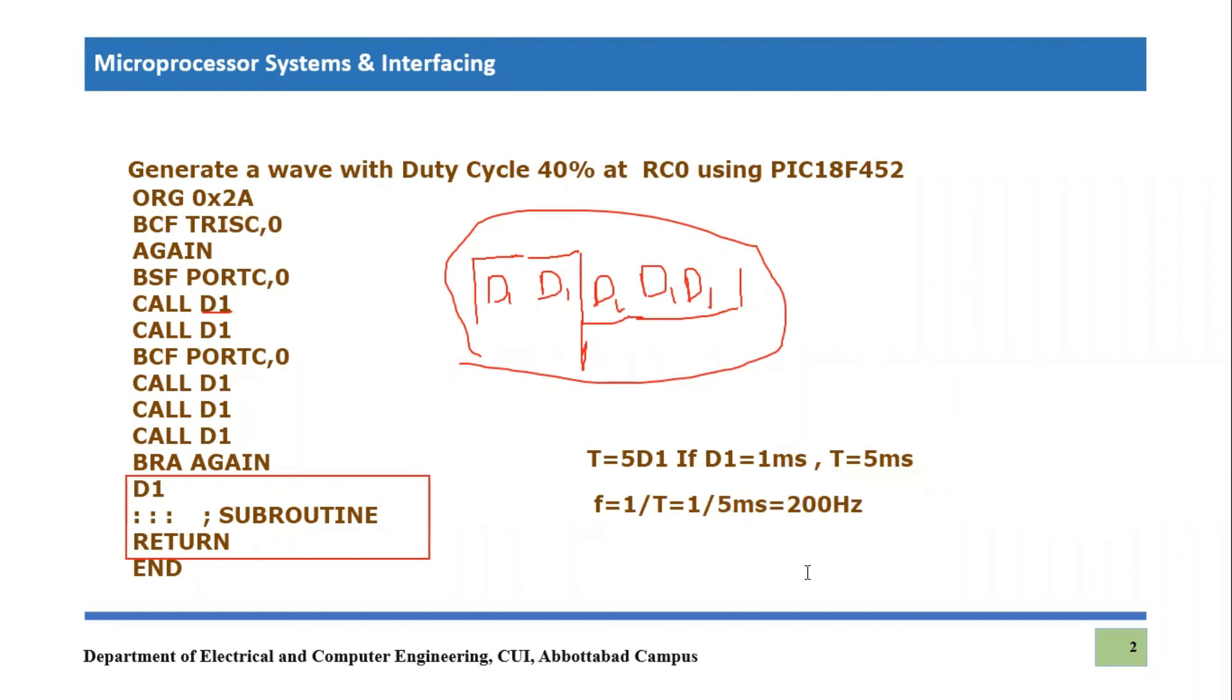Since we can calculate the frequency of this wave using the duty cycle, or if we are known with the duty cycle, we can also reverse the procedure. If you are asked to generate the frequency, generate a wave with a certain frequency, let's say we are asked to calculate a square wave or rectangular wave with a frequency of let's say two Hertz. So what you have to do, you have to convert that frequency into time period and time period would be equal to one upon two.